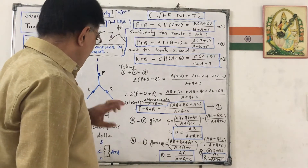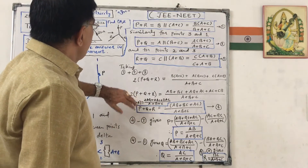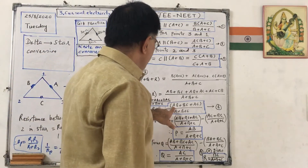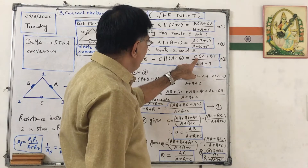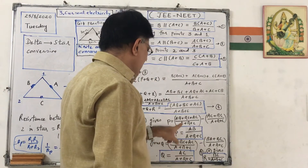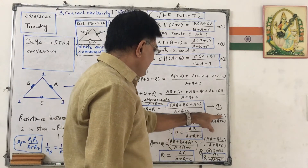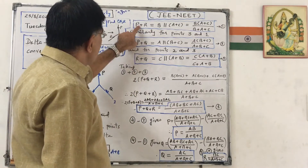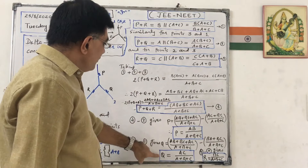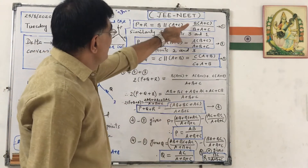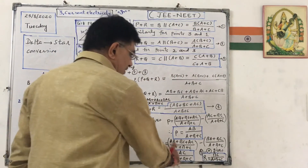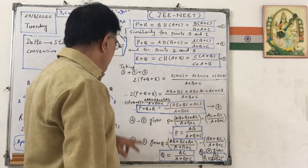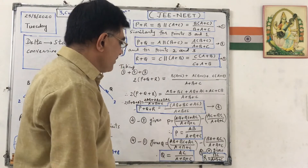Now if you want to find out P, subtract equation 3 from equation 4: (AB plus BC plus AC) upon (A plus B plus C) minus (AC plus BC) upon (A plus B plus C) — BC and AC cancel — so P equals AB upon (A plus B plus C). Similarly for Q, subtract equation 1 from equation 4, and you get Q equals AC upon (A plus B plus C). And for R, subtract equation 2 from equation 4, giving R equals BC upon (A plus B plus C).